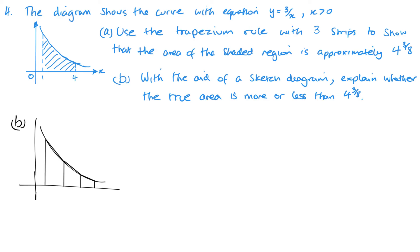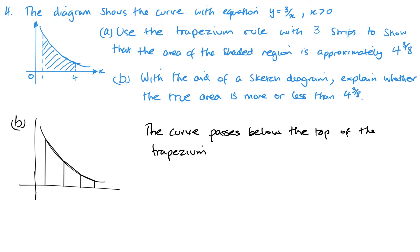For your diagram in an exam, show something like three strips and clearly show how the line of the trapezium is above the curve. That's what you want to be showing with your diagram, then say it in words: the curve passes below the top of the trapezium, and therefore the true area is less than the estimate. Something along those lines. Hopefully you found this useful — this is probably the easiest part to finish P2 on. Don't forget to subscribe.